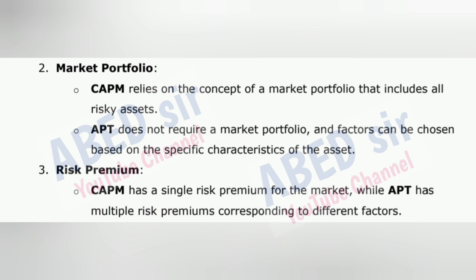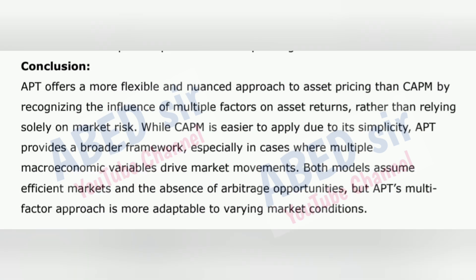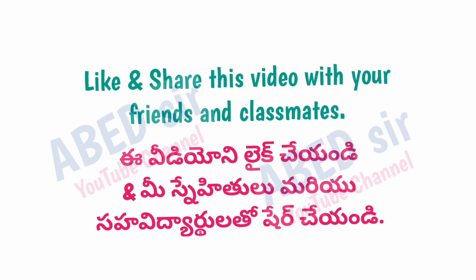3. Risk premium — CAPM has a single risk premium for the market, while APT has multiple risk premiums corresponding to different factors. Conclusion: APT offers a more flexible and nuanced approach to asset pricing than CAPM by recognizing the influence of multiple factors on asset returns rather than relying solely on market risk. While CAPM is easier to apply due to its simplicity, APT provides a broader framework, especially in cases where multiple macroeconomic variables drive market movements. Both models assume efficient markets and the absence of arbitrage opportunities, but APT's multi-factor approach is more adaptable to varying market conditions.